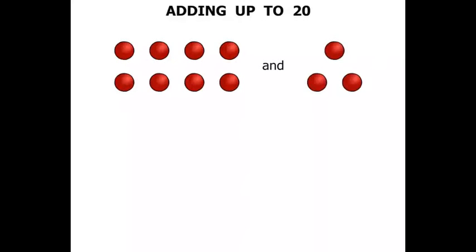Adding up to 20. Now we've got a number of red balls there and some more red balls. Let's see how many we've got in this first group. 1, 2, 3, 4, 5, 6, 7, 8. We've got 8 in that first group there.